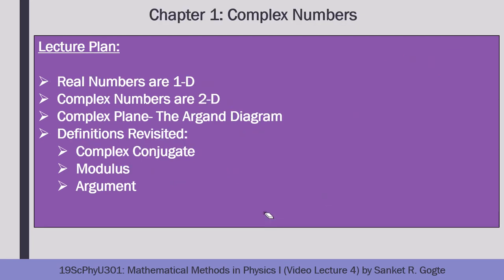For this lecture, the plan is as follows. We will first briefly discuss what dimensions of a given system are, specifically in reference to the fact that real numbers are one-dimensional whereas complex numbers are two-dimensional. Then we will see how to plot a complex number in a plane called the Argand diagram. We had postponed the interpretation of the definitions in the last lecture, so we will revisit them and interpret their meanings from a geometrical point of view.